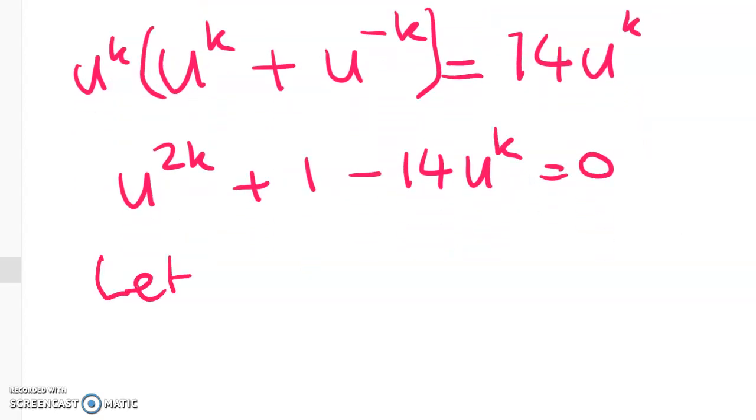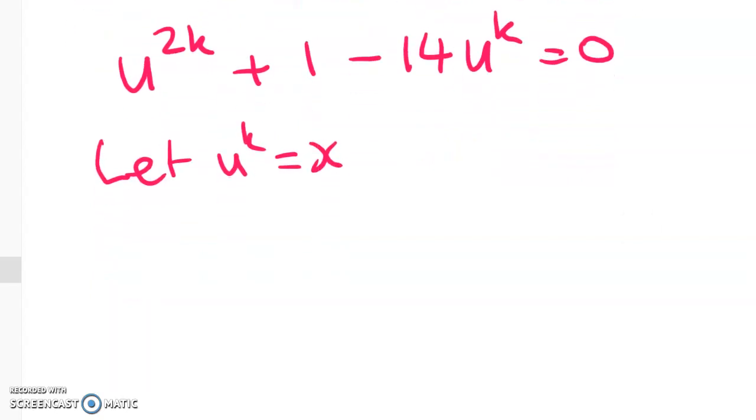Now we're going to let u to the power of k equals x, and I'm going to do that explicitly here because I've got so many weird substitutions going on already. So I've got x squared minus 14 x plus 1 is equal to 0.